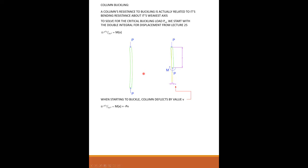EI d²v/dx² equals M_x, and M_x equals negative P times v. The moment equals the axial load times the eccentricity, which is the magnitude of the deflection. If I move the PV to one side and solve for zero, then take P/EI over to this side and solve the differential equation, the solution gives: P critical equals n²π²EI over L². We're looking for the critical load that causes this thing to buckle and become unstable.